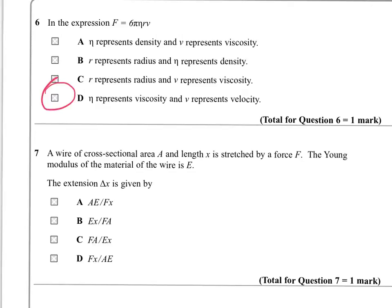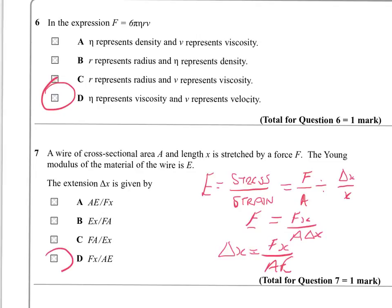A wire of cross-sectional area A and length X is stretched by a force F. The young modulus of the material of the wire is big E. The extension delta X is going to be given by one of these expressions. So we remember that young modulus E is stress over strain. Stress is force over area. And strain is delta X over X. So we're taking force over area and dividing by delta X over X. And that's the same as turning the second thing upside down and multiplying. And so that's giving us E equal to Fx over A delta X. Now we want delta X on its own. And that means we have to swap it with big E. And that tells us that the answer here is D.